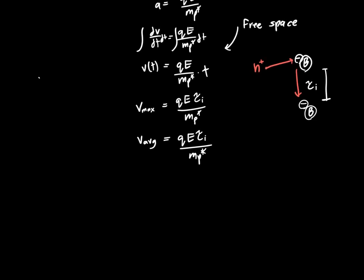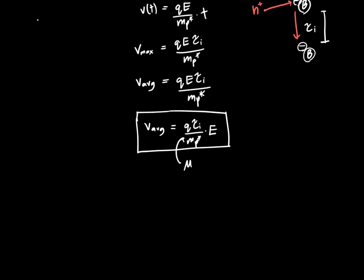This is an interesting result because it says that the velocity is proportional to the electric field. We can rewrite the average velocity as q tau i over mp star times the electric field. Before it was the acceleration that was dependent on the electric field, but when you've got a lattice and you've got this scattering process that goes on constantly, the velocity is proportional to the electric field. We call this constant of proportionality the mobility mu, and so we can rewrite this equation as v average equals mu E, or the velocity due to an electric field is equal to this constant of proportionality mu, called the mobility, times the electric field.